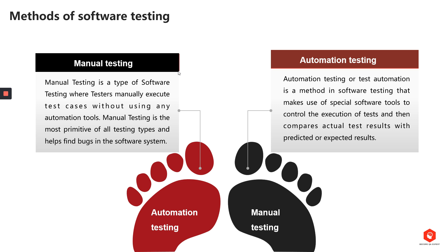Basically, testing checks the quality of the system and delivers as much as possible a bug-free product to the customer — not 100% bug-free, but as much as possible. That is really important to know. Now let's talk about the second method of software testing, and that is automation testing.